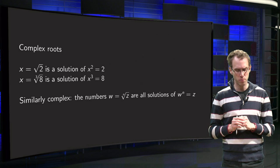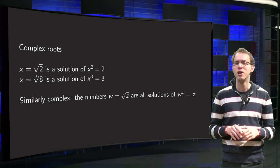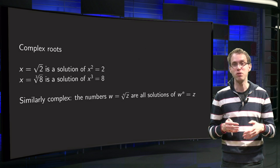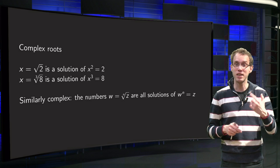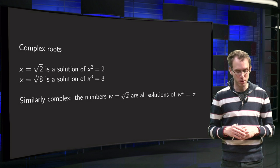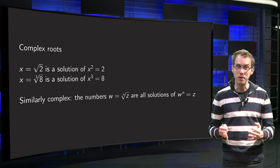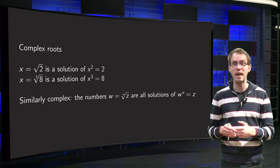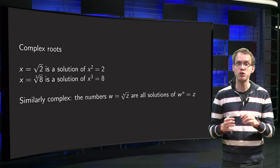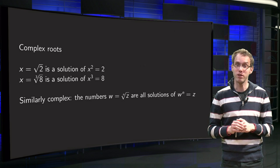So what are roots? What is, for example, the square root of 2, if you just look at the real numbers? Well, if you have x equals the square root of 2, that means that x is one of the solutions of the equation x squared equals 2 — that is how you define the square root of 2. Similarly, if you have the cube root of 8, x equals the cube root of 8, you mean that x is the solution of the equation x cubed equals 8. So roots are in fact solutions of polynomial equations.